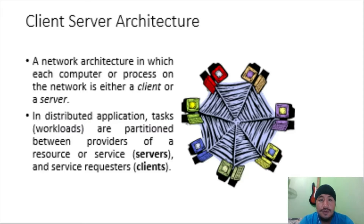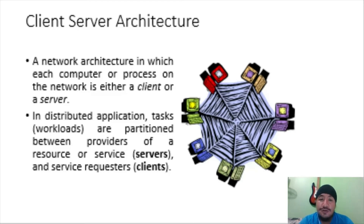So what is client-server architecture? In this presentation we look at it in two perspectives. In the network perspective, it is a network architecture in which each computer or process on the network is either a client or a server. In the application perspective, particularly in distributed applications, the tasks or workloads are partitioned between providers of a resource or service — the servers — and service requesters, or clients.